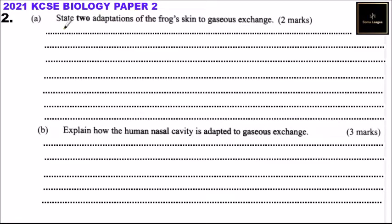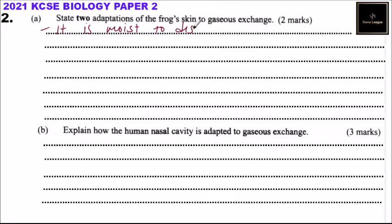Question number two. State two adaptations of the frog skin to gaseous exchange, and you get two marks. One adaptation is the frog has mucus glands in the skin that produce mucus, which helps in dissolving the oxygen to be absorbed. So you can say it is moist — it is moist to dissolve respiratory gases or oxygen.